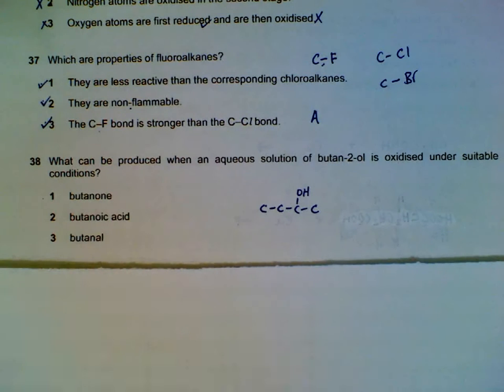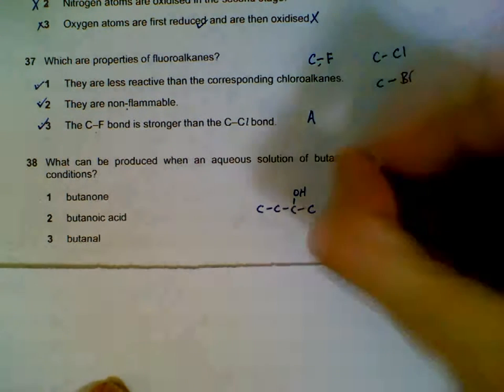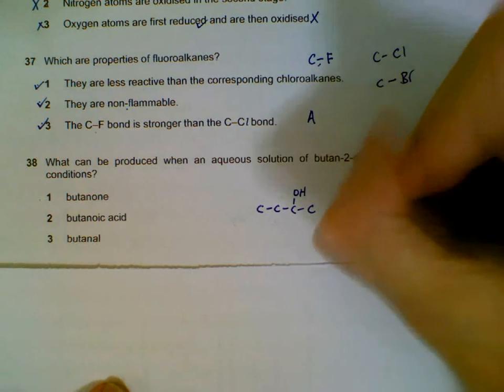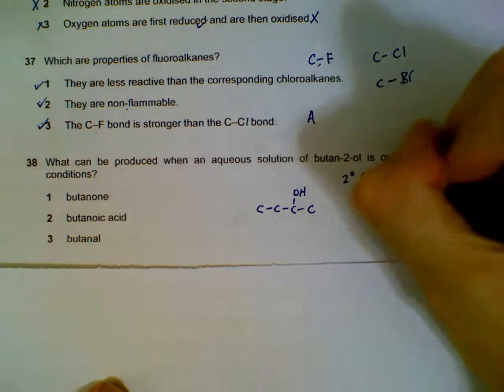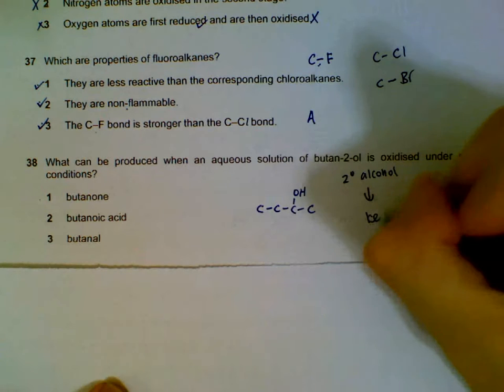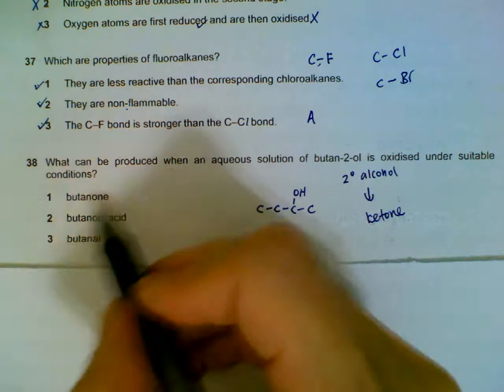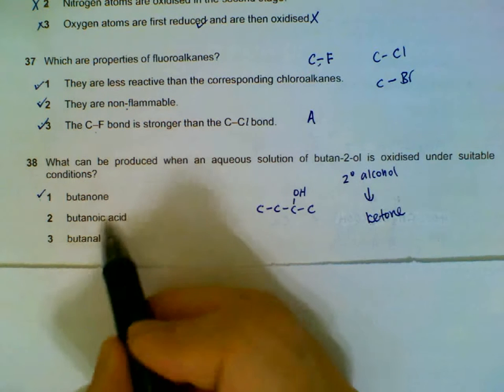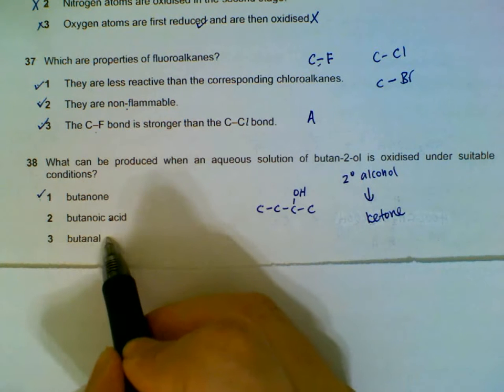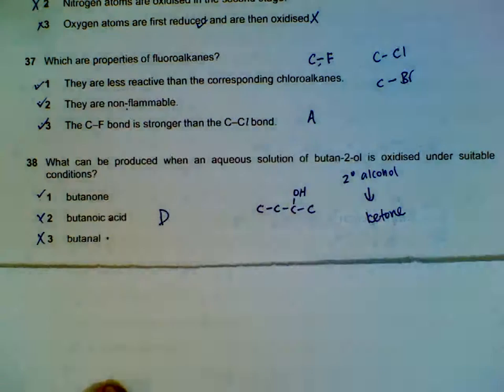What can be produced when a solution of butanol is oxidized? Butanol - this is a secondary alcohol. When it's oxidized, a secondary alcohol, we will expect to get a ketone. So ketone - we don't get an acid, we don't get an aldehyde unless we are talking about primary alcohol being oxidized. So only statement 1 is correct.